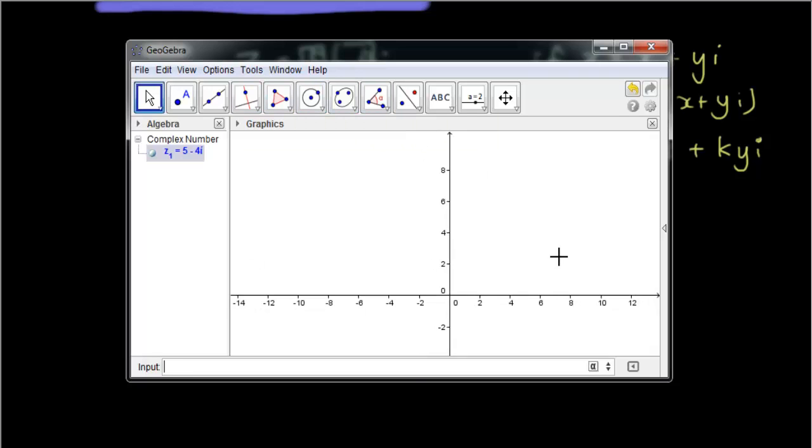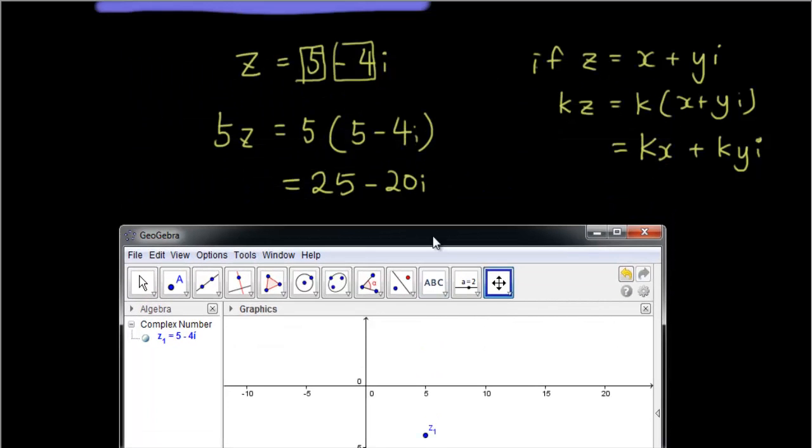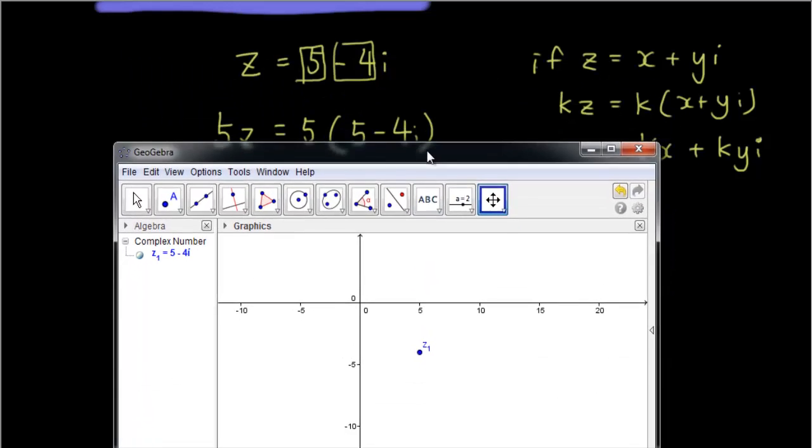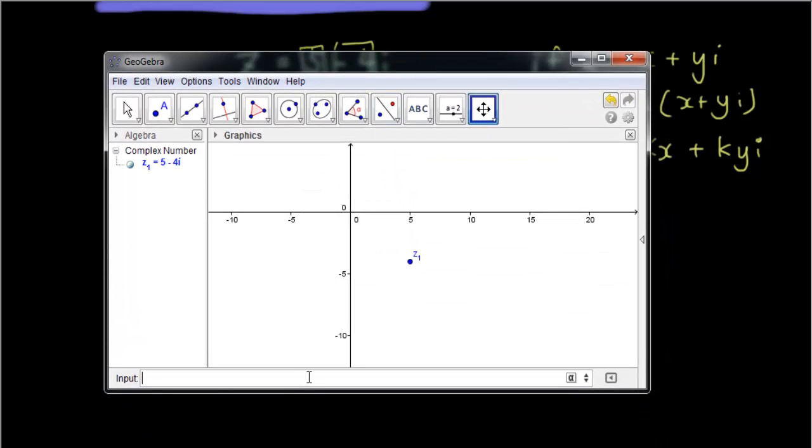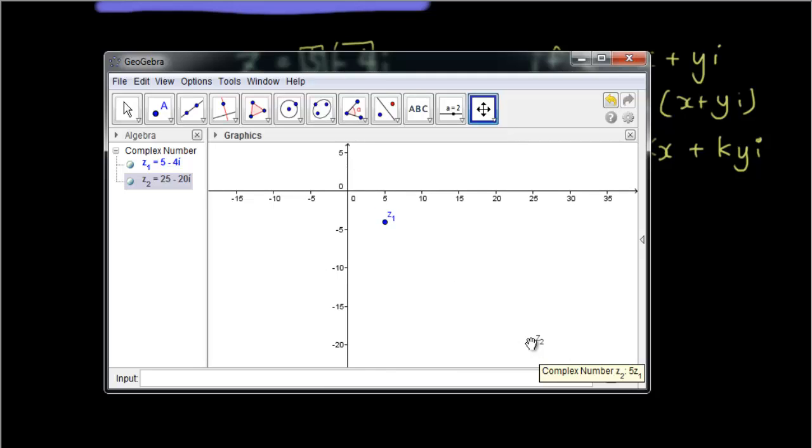Okay, and you have to zoom out a bit to see it, so 5 minus 4i is here. And then if we multiply that by 5, so instead of typing 5 times (5 minus 4i), which you can do, or you can just type 5 times z1, means the same thing. If you type that in, you can see here that we end up with a dot all the way over here in z2.